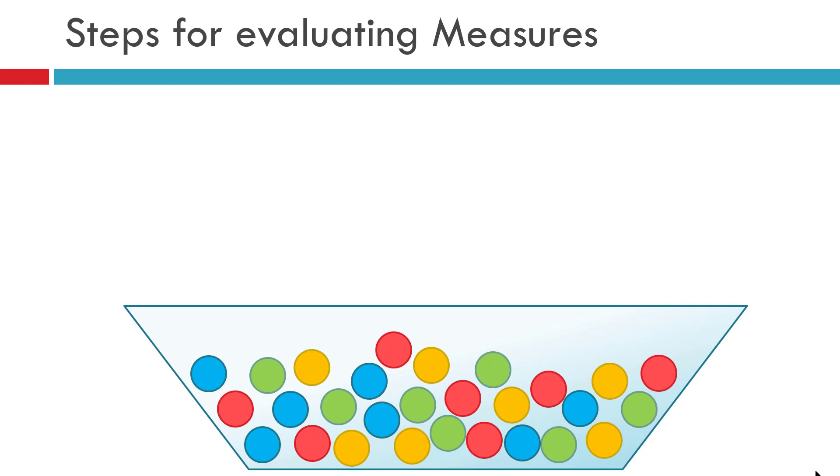To explain the steps or rules about how calculation happens in the backend for any DAX measures before the results are displayed on screen, I'd like to take a simple example of counting balls from this particular jar. Imagine that there is a jar having balls of different colors: yellow, blue, green, and red.